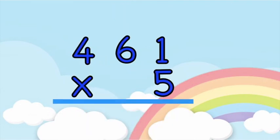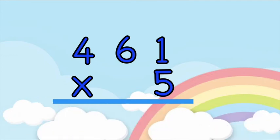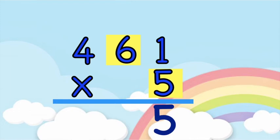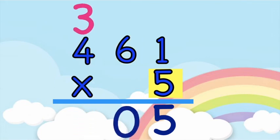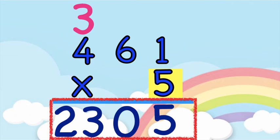How about if you have this: 461 times 5. Let's solve it together. 5 times 1 — very good, it's 5. How about 5 times 6? 5, 10, 15, 20, 25, 30. We have 30. So write 0 at the bottom, then carry 3 at the top of 4. And then 5 times 4 — 5, 10, 15, 20, plus 3 — good job, that's 23. So the product of 461 and 5 is 2,305.